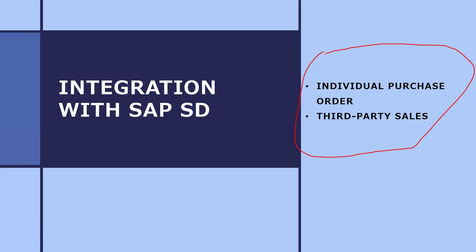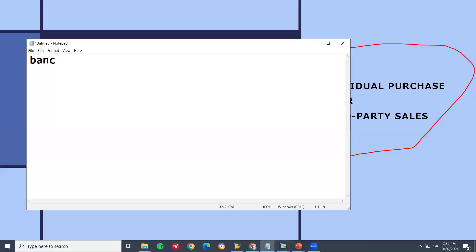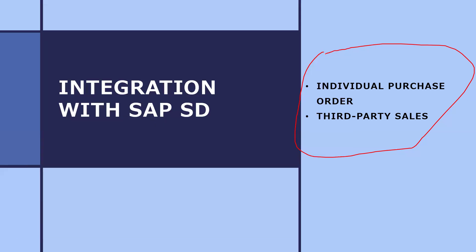They have asked: what is the item category group for third party? It is BANS — B-A-N-S. BANS is for third party. Next question.